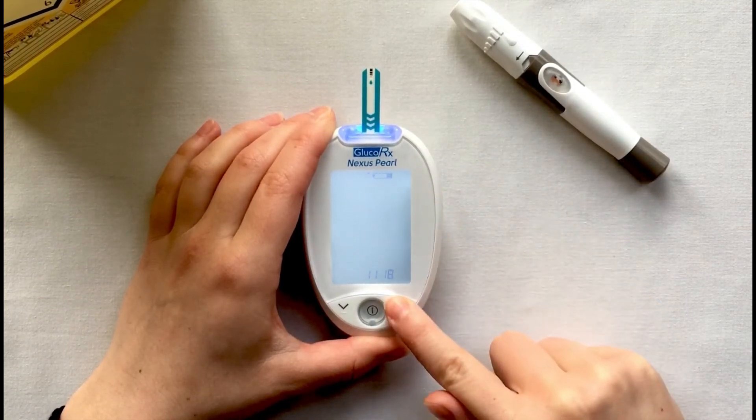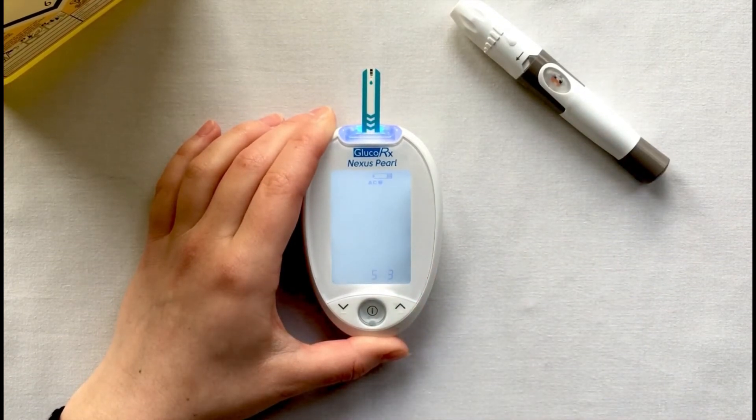It is important to select the correct measuring mode with each reading to benefit from the colour light indicators. Then put your meter down.